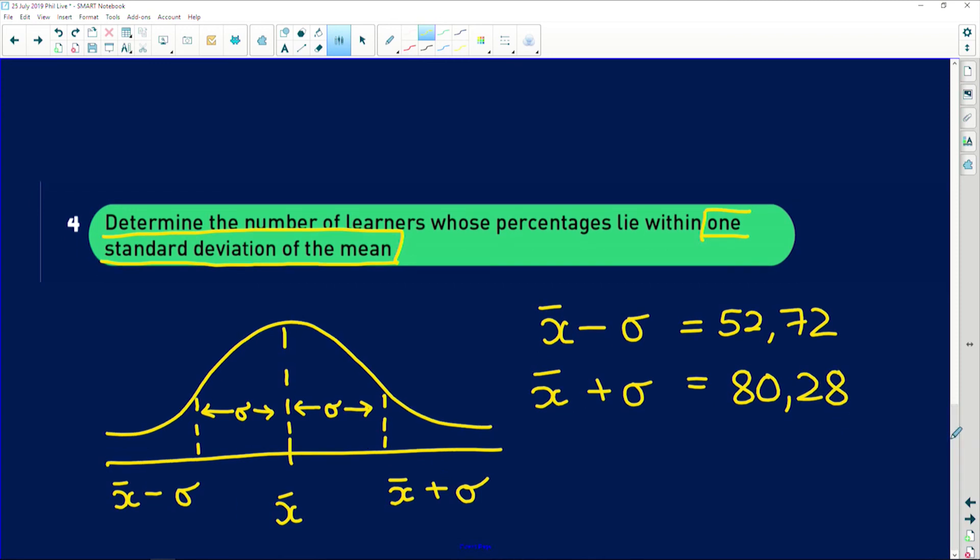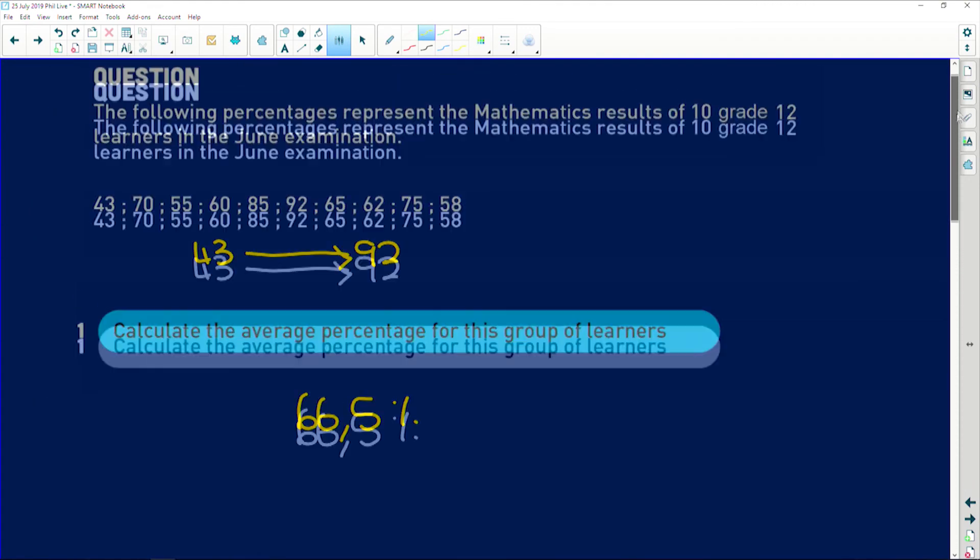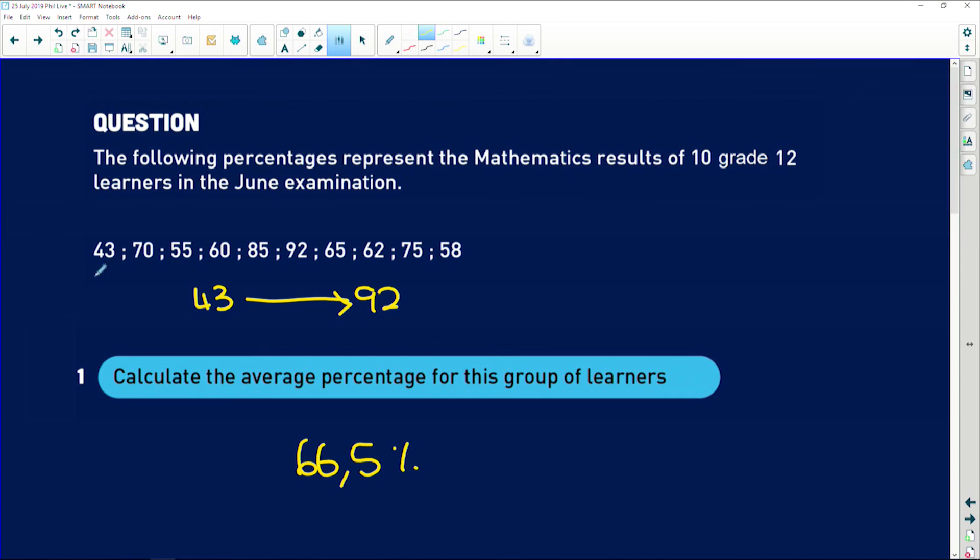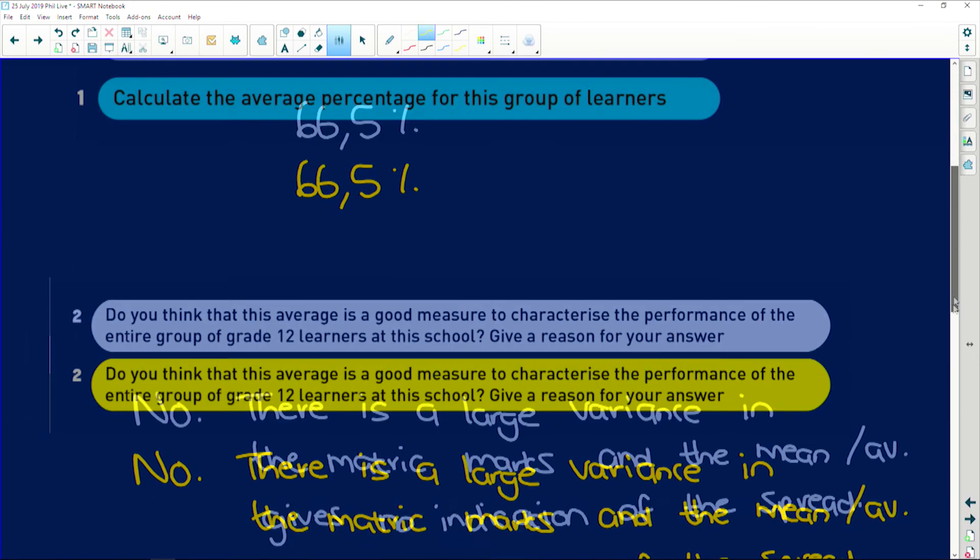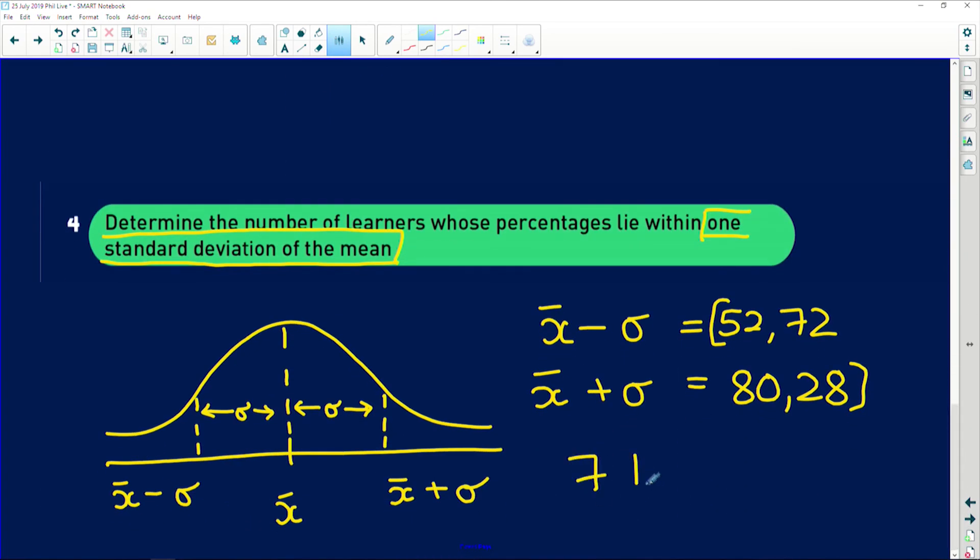So basically we're trying to find how many learners sit in this interval over here. Okay. So we're looking from about 53% to 80%. So we have one, two, three, four, five, six, seven learners that sit in that interval. So you would say seven learners.